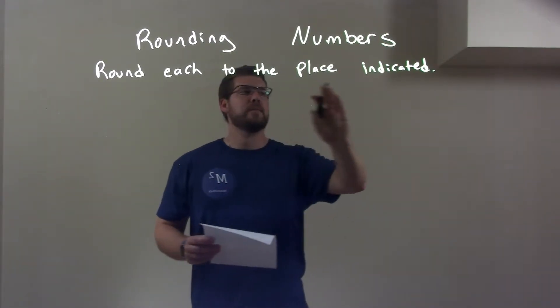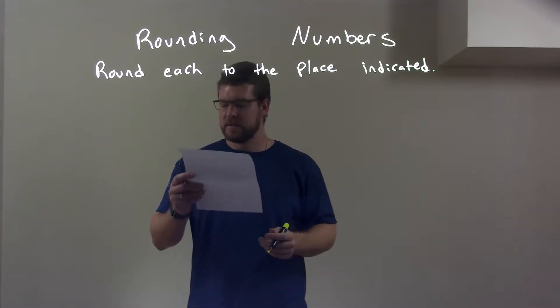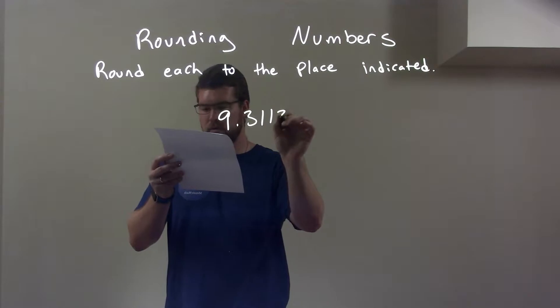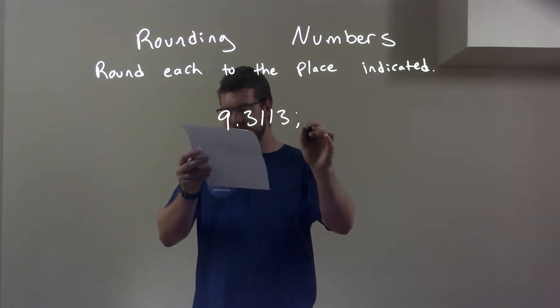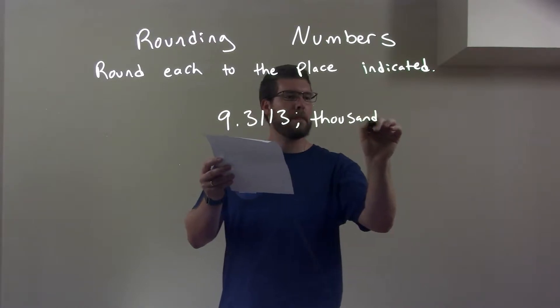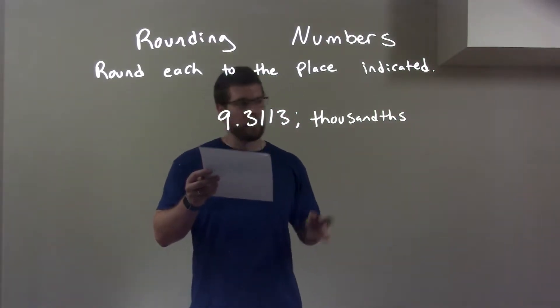Round each of the places indicated. So if I was given this number, 9.3113, and we're going to round to the thousandths. Round to the thousandths.